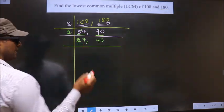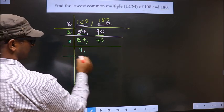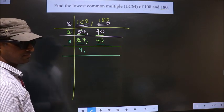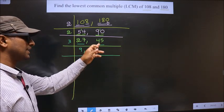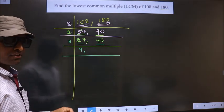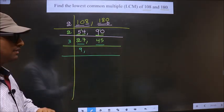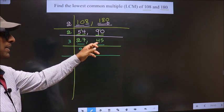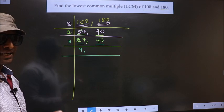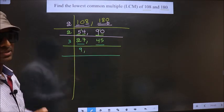Now here we have 27. 27 is nothing but 3 times 9, which is 27. The other number is 45. How do we decide whether 45 is divisible by 3 or not? For that, we should add the digits — that is 4 plus 5, we get 9. Is 9 divisible by 3? Yes. So this number is also divisible by 3.